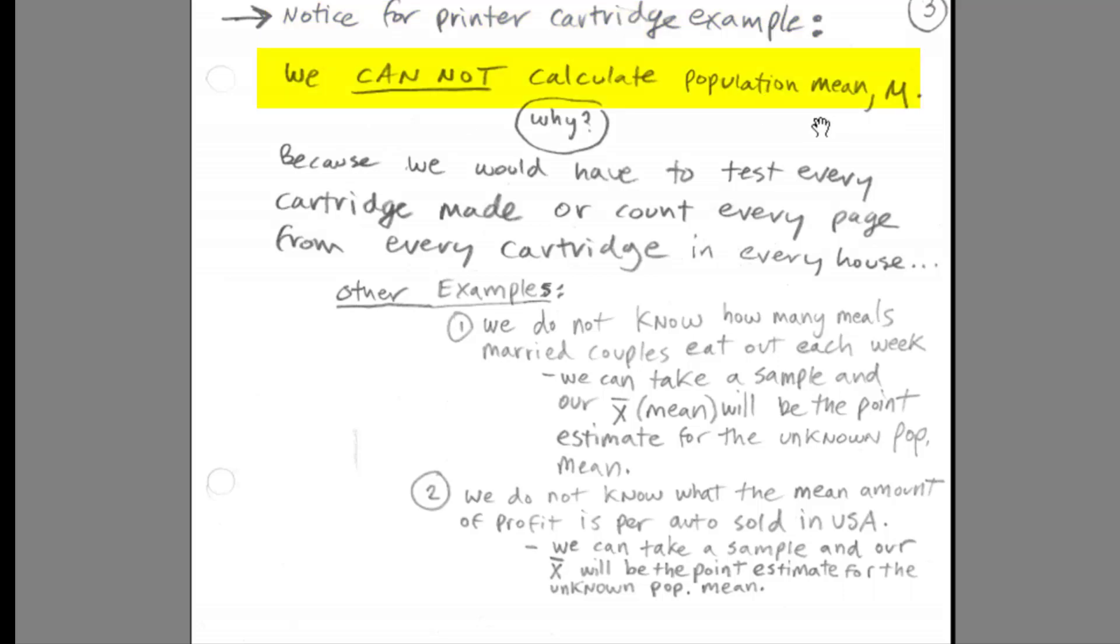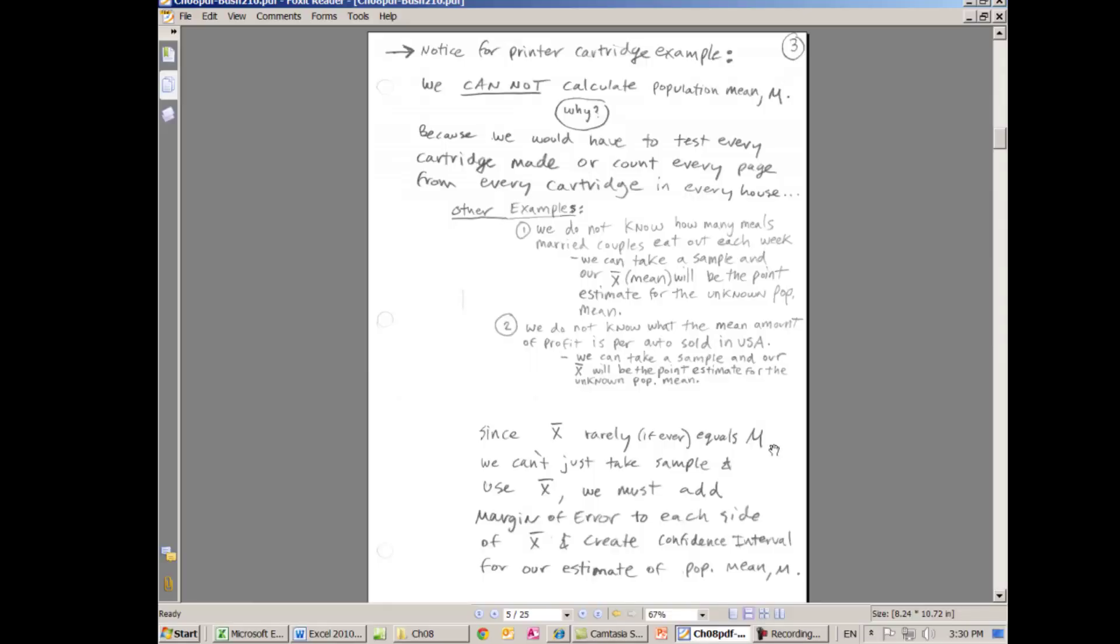Next slide. Let's notice something for the printer cartridge example. And we already mentioned this. We cannot calculate population mean. Why? Because we can't possibly test every cartridge made or count every page for every cartridge in every house. Not possible. In this case, we do sampling and create a confidence interval. Other examples, we do not know how many meals married couples eat out each week. There is no way to calculate that. No database you can go to to get all that data. We do not know what the mean amount of profit is per auto sold in the US. So three examples here included in our cartridge example where confidence intervals is a great way to estimate the population mu.